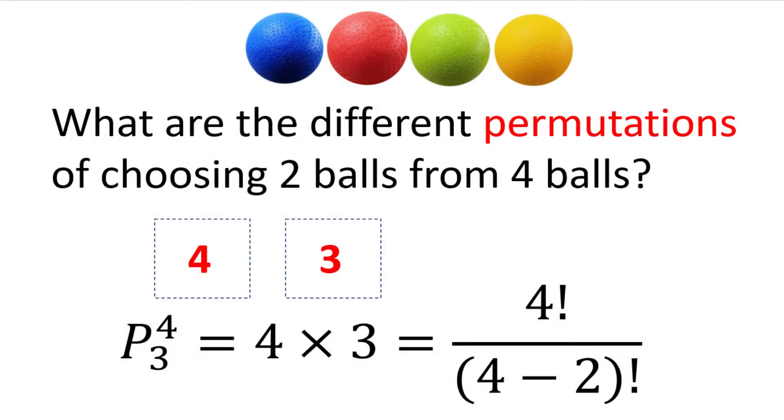Next, our goal will be to derive a general formula for calculating permutations. Let's consider the different permutations of choosing two balls from four balls. In the first pick, we have four choices. In the second pick, we are left with three choices since we are not allowed to replace the ball.